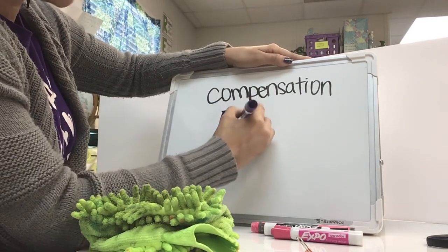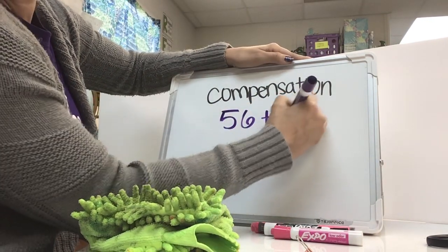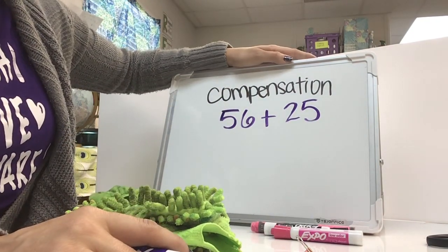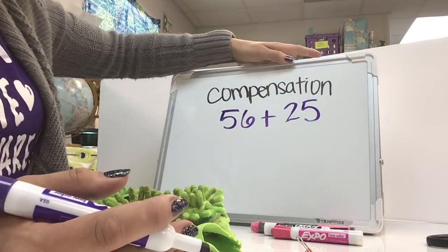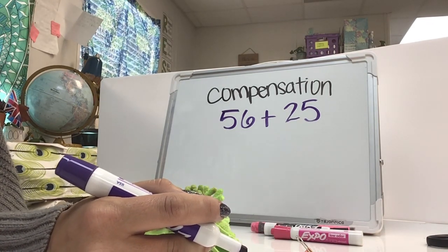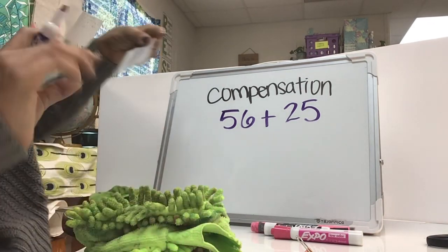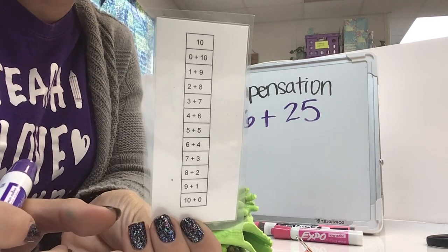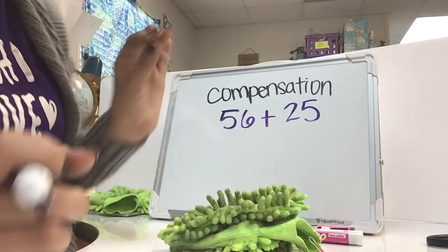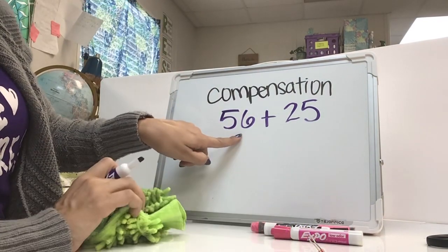The first problem we're going to start with is 56 plus 25. When I'm doing compensation, I try to think of what's the partner pair that will help me get to the next 10 so I can make this a much easier problem. Knowing your fact families for 10 is something that should be memorized at this point. But I could do this in two different ways.